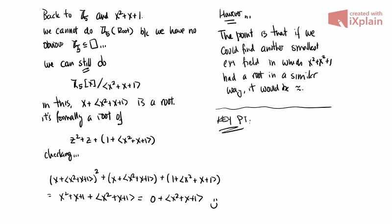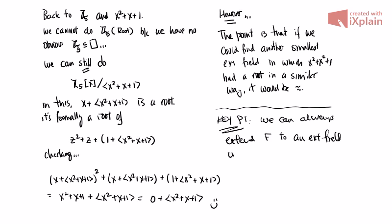The key point of all of this: there is always an extension field. We can always extend F to an extension field in which there's a root.